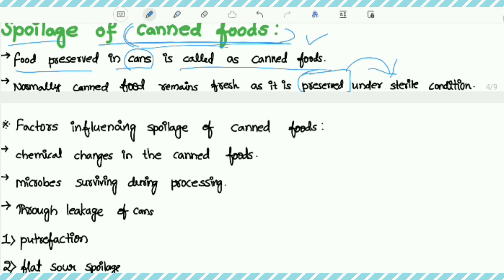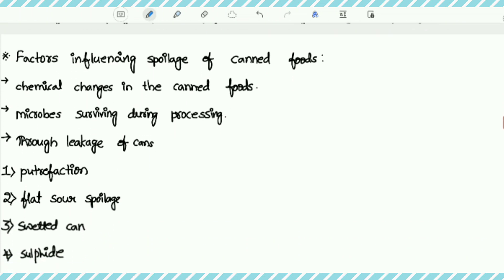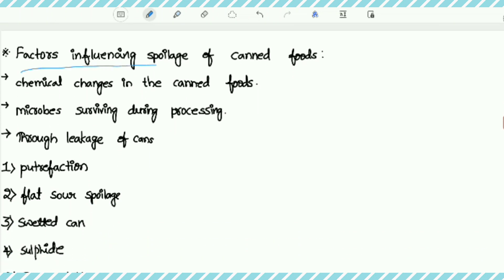Normally canned food remains fresh as it is preserved under sterile conditions. Sterile condition means free from bacteria. Here we will look at the factors influencing spoilage of canned foods — those are the factors causing the spoilage of canned foods.